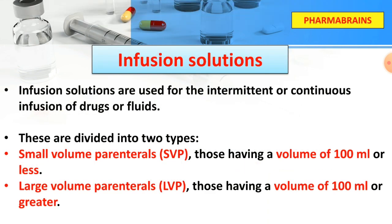Next is infusion solutions. These are drugs or fluids administered by continuous or intermittent infusion. They are divided into two types: Small Volume Parenteral (SVP), which is 100 ml or less, and Large Volume Parenteral (LVP), which is greater than 100 ml. This is an important difference to remember.